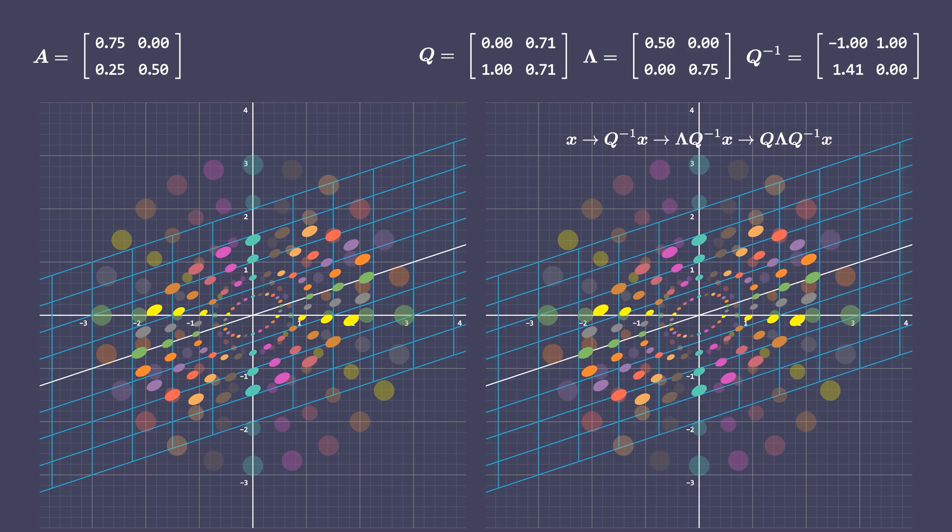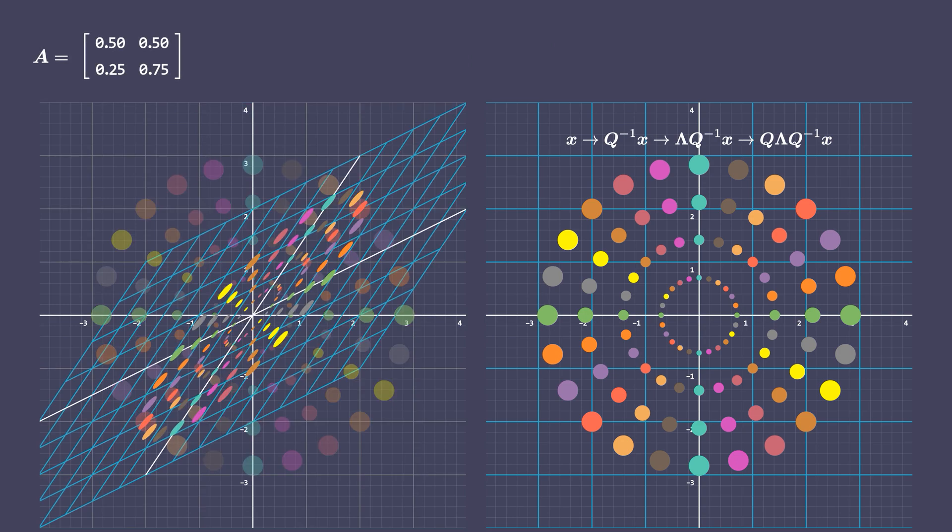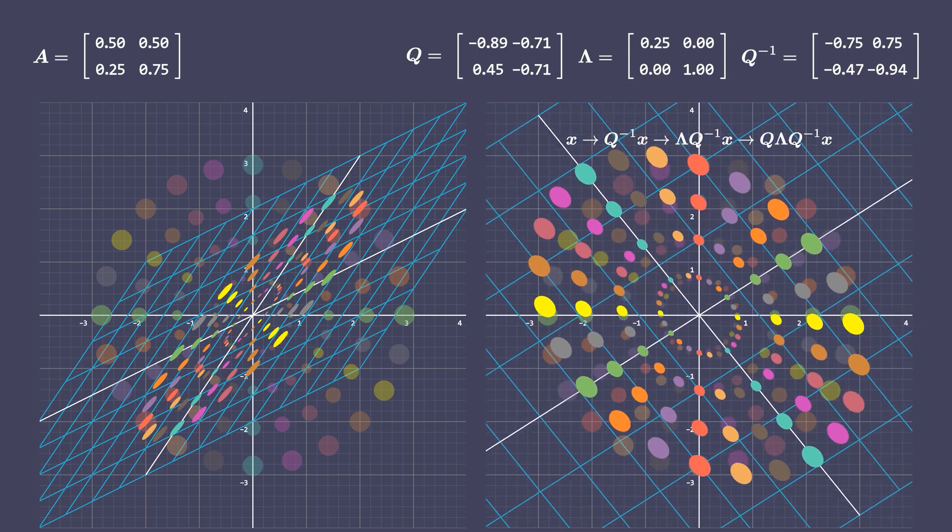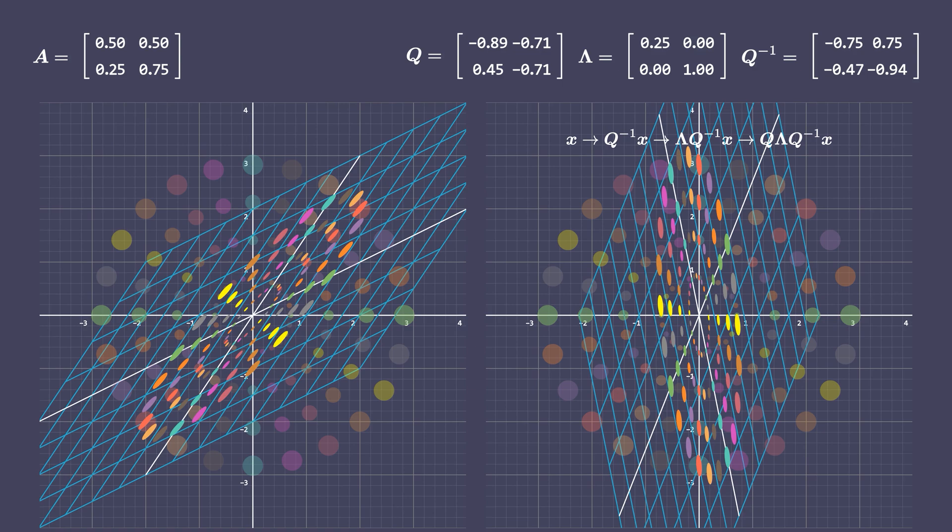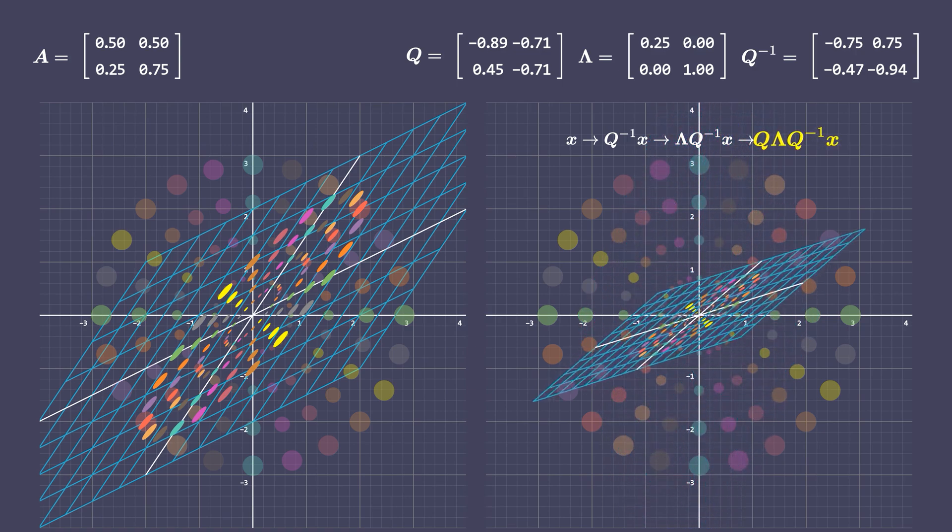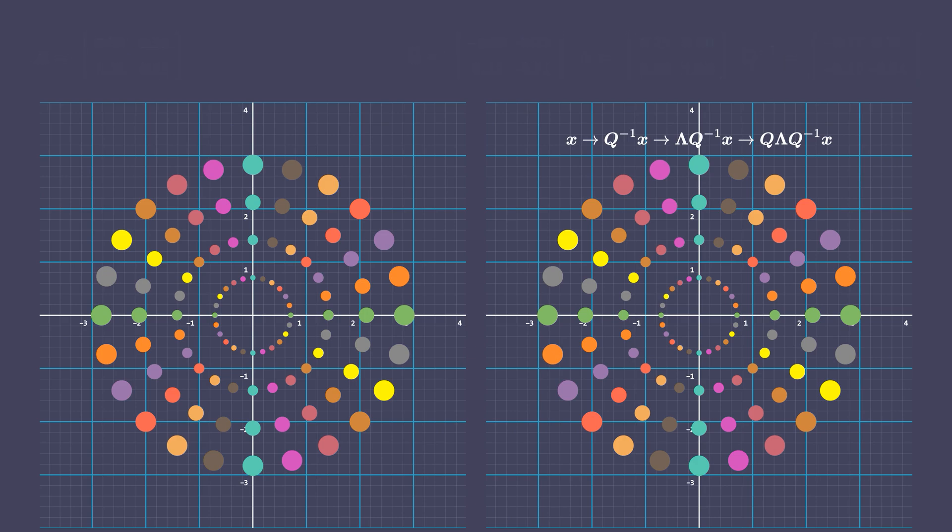that is then scaled by matrix lambda in the second step. And in the final step, the transformation matrix Q, being an inverse of the first step, reverses the rotation from the first step. Notice this in the next example. Now let's see the effect of a matrix for which one of the elements of the diagonal matrix lambda becomes almost zero. Notice how the space gets squashed in that direction.